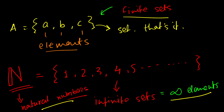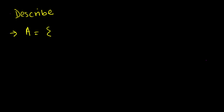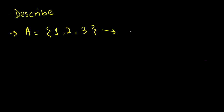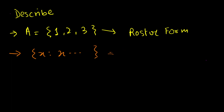In the previous video we learned what sets are, what are some types of sets, and what are some commonly known sets. Today we're going to learn how to describe those sets. There are several ways to do that. First is roster form, where you simply list the elements and put curly braces around them. Second is set builder notation — I will explain that in a moment.